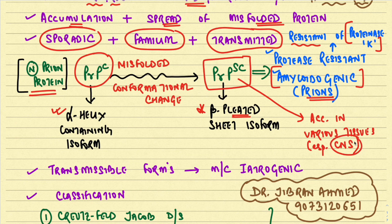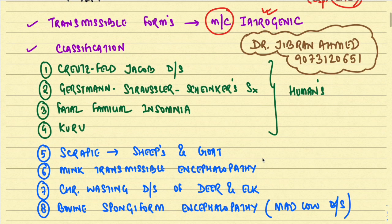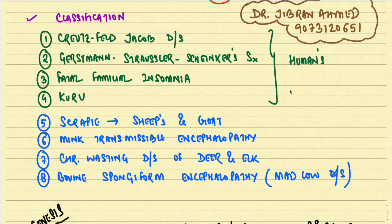Among the transmissible forms, disease most commonly occurs by iatrogenic means. For example, growth hormones derived from cadavers of patients infected with prion disease can transmit it, as can corneal or dural transplants. In any of these transplants or medical procedures, the doctor can by mistake transmit the disease — so most commonly the transmissible form is iatrogenic in nature.